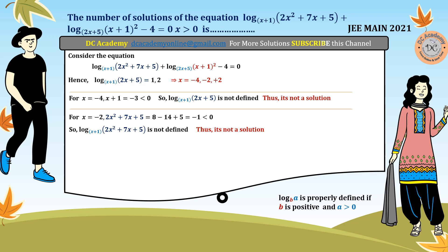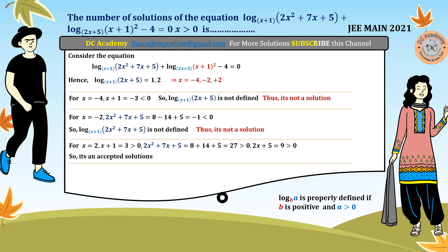The only remaining candidate is x = 2. At x = 2, we check: x+1 = 3 > 0, 2x²+7x+5 > 0, and 2x+5 = 9 > 0. All log functions are properly defined, so x = 2 is the only valid solution. Therefore, the number of solutions of this equation is 1, and the exact solution is x = 2.